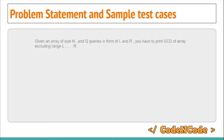Now we are taking on this problem which says: you are given an integer array of size n, you are given q queries of the form l and r, and you have to print the GCD of the array excluding the range l to r. Basically you have to exclude the range l to r and find the GCD of the remaining elements of the array.